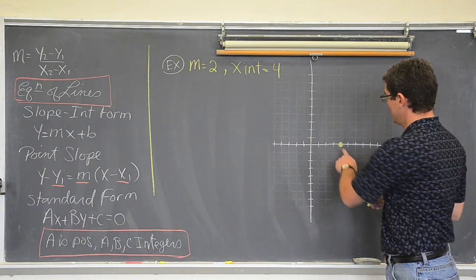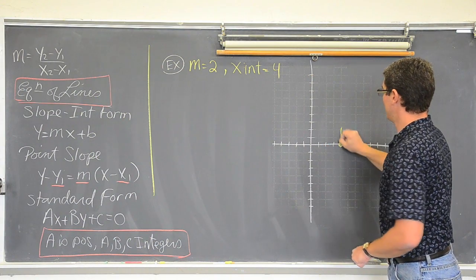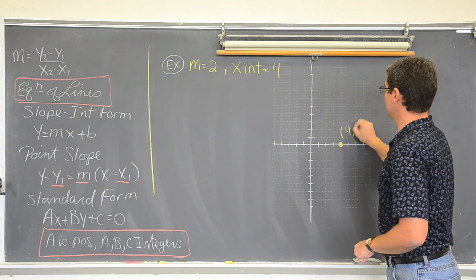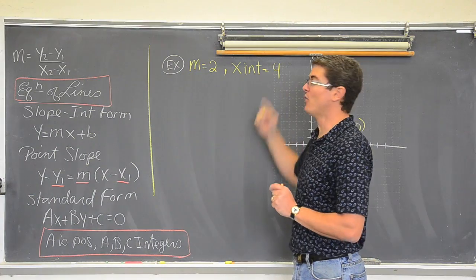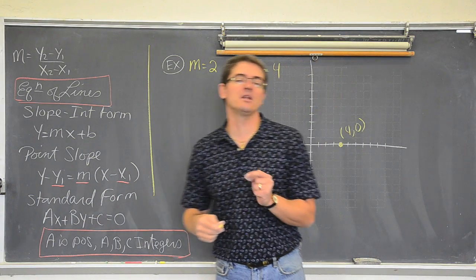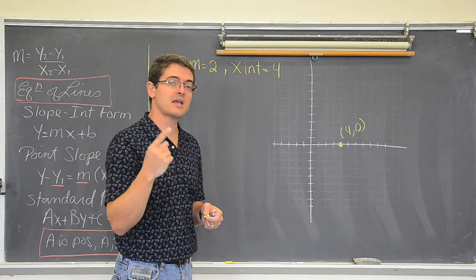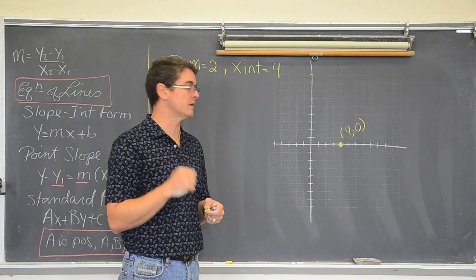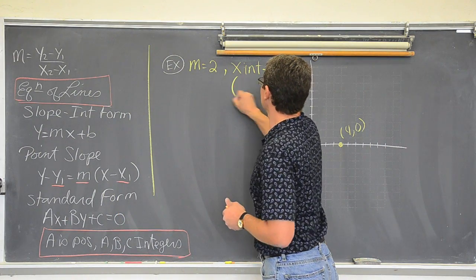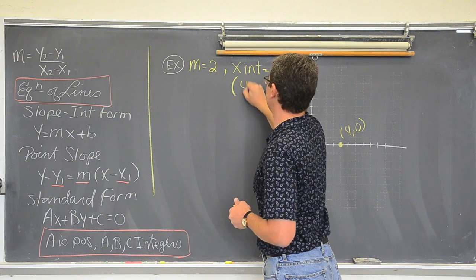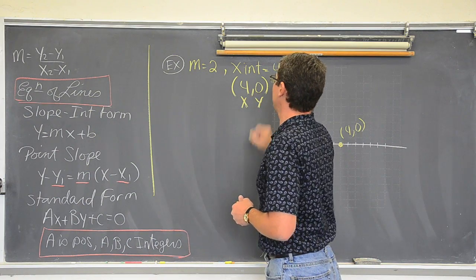The coordinate of that point is 4, 0. So when I say the x-intercept is 4, it only seems like you are given one number — I am actually giving you 2. You do have the x and the y coordinate. So below here we have the point again, 4, 0. That is going to be my x and my y.